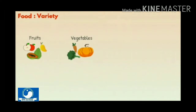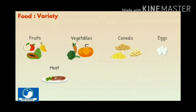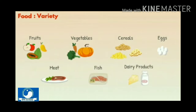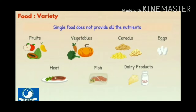There are a variety of food. For example, fruits, vegetables, cereals, eggs, meat, fish and dairy products. However, a single food does not provide all the nutrients.